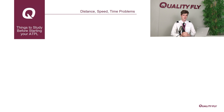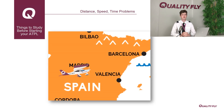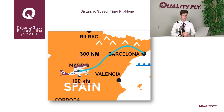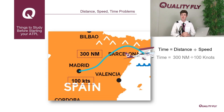If we want to fly between Madrid and Barcelona — a distance of approximately 300 nautical miles — and we fly at 100 nautical miles per hour, or knots, this journey will take us approximately three hours. These tasks will become a daily part of your life as a pilot, so make sure you get used to them, but don't worry — we have a lot of time to practice.